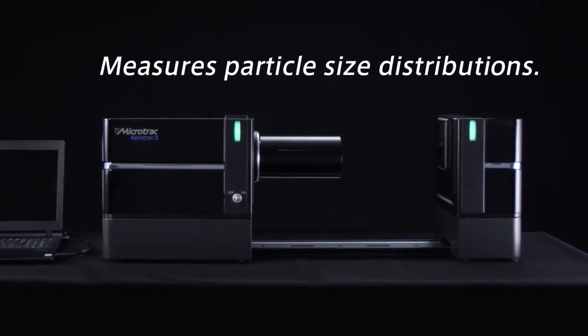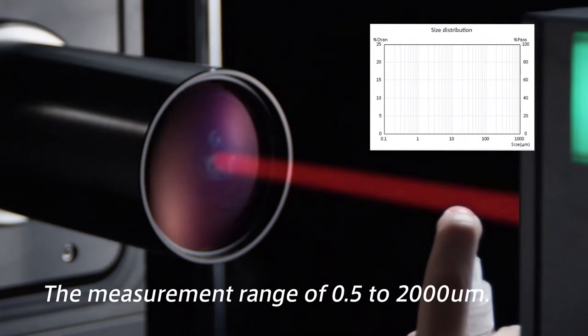The measurement range of Aerotrack 2 is 0.5 to 2,000 micrometers.